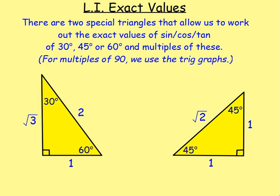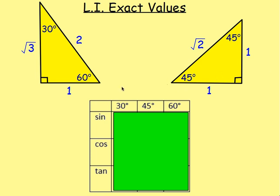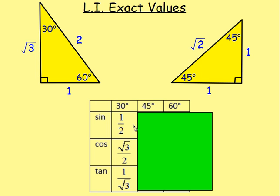So the two triangles you need to remember let you work out the exact values of sine, cos, or tan of 30, 45, 60, or their multiples. For sine of 30 degrees: find the 30-degree angle, sine is opposite over hypotenuse, so the opposite is 1, the hypotenuse is 2 — giving 1/2. Cos of 30 is adjacent over hypotenuse: root 3 over 2. And tan of 30 is opposite over adjacent: 1 over root 3.